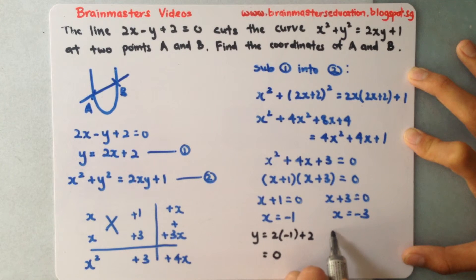And here will be y equals to 2 bracket negative 3 plus 2. And that will give me my y equals to negative 4. So my coordinates will be negative 1 and 0, and for my B will be negative 3 and negative 4.